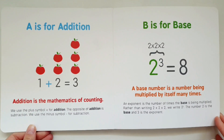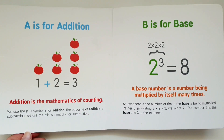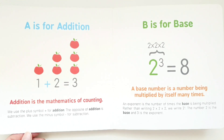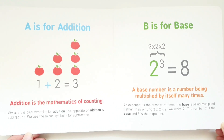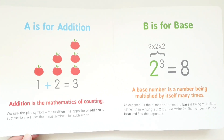A is for addition. Addition is the mathematics of counting. We use the plus symbol for addition. The opposite of addition is subtraction. We use the minus symbol for subtraction.